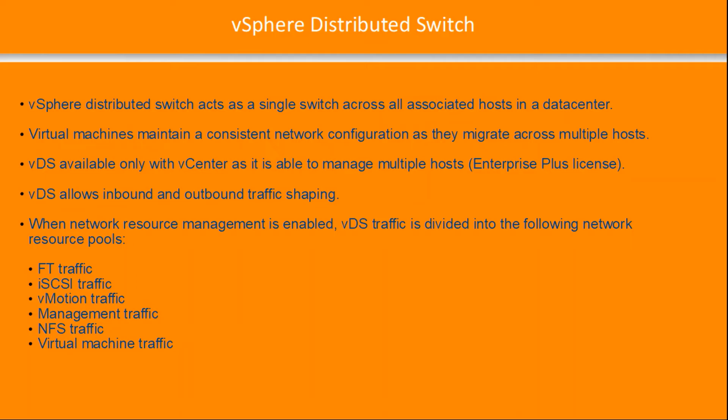The VDS allows inbound and outbound traffic shaping. When network resource management is enabled, it allows dividing traffic into a number of network resource pools, including fault tolerant traffic, iSCSI, vMotion, management traffic, NFS, and virtual machine traffic.